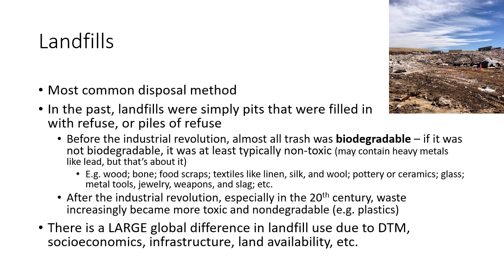Before the Industrial Revolution, almost all trash was biodegradable — meaning microorganisms can eat through it and it decays. If it wasn't biodegradable, it was at least non-toxic. It might contain heavy metals, especially slag from metal smelting, but it was at least more or less non-toxic. A lot of the old waste was stuff like wood, bone, textiles, food scraps, ceramic, glass, etc.